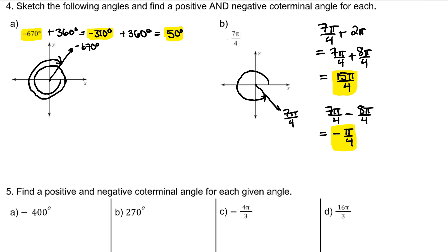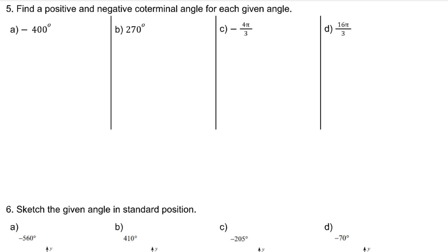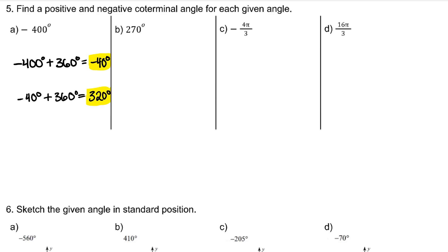Find a positive and negative coterminal angle for each given angle. To find coterminal angles, keep adding 360 or subtracting 360. If given in radians, keep adding 2 pi or subtracting 2 pi until you get a positive angle and a negative angle. When we added 360, we got a negative coterminal angle, so we won't even need to subtract 360. Remember, there are infinitely many answers — negative 40 and 320 are not the only positive and negative coterminal angles to negative 400.